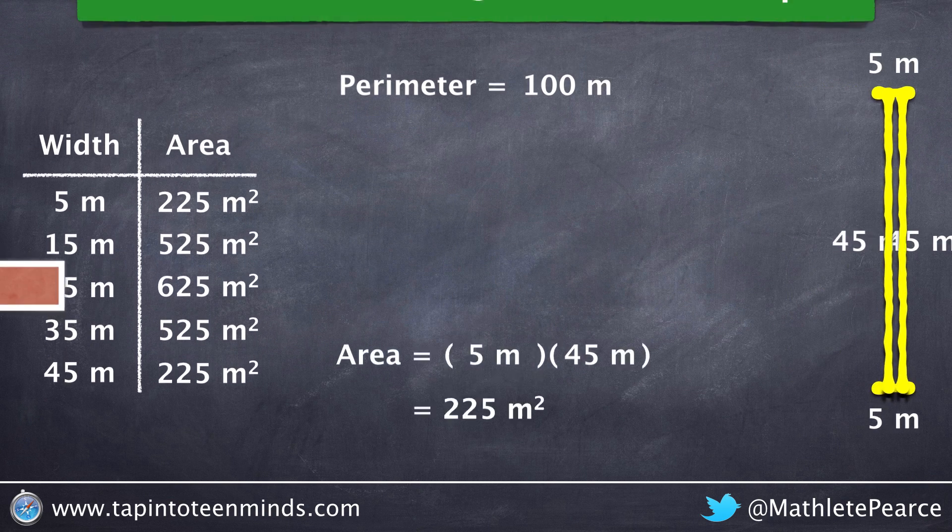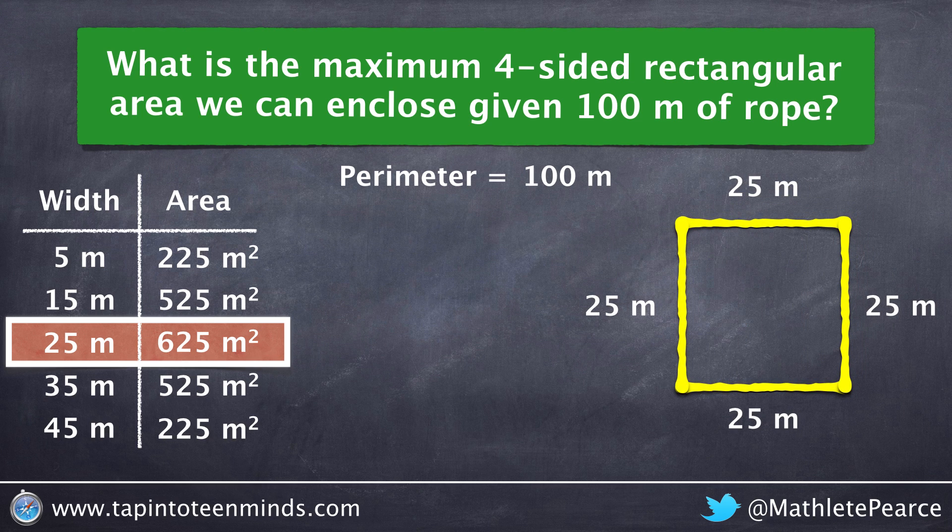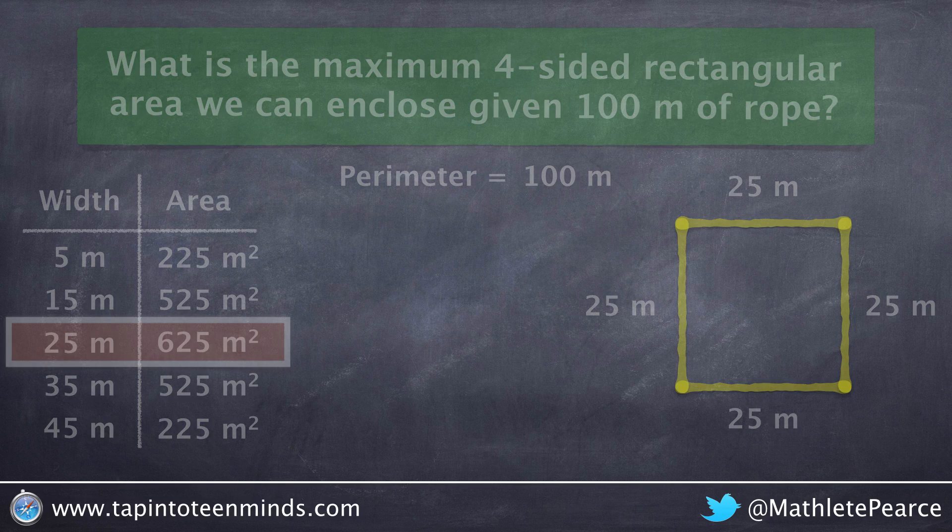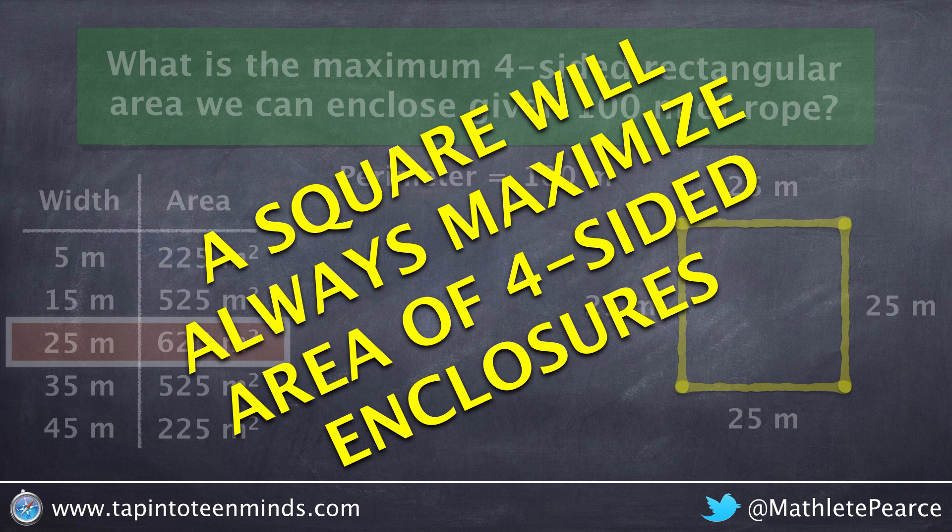So in conclusion, when we look at our relationship between width and area, we can see that maximizing a four-sided rectangular enclosure will involve the use of a square. In this case, a 25 meter by 25 meter square. So in general, a square will always maximize the area of a four-sided rectangular enclosure.